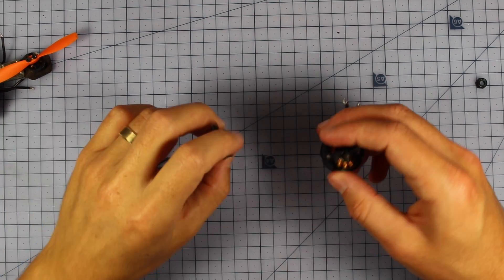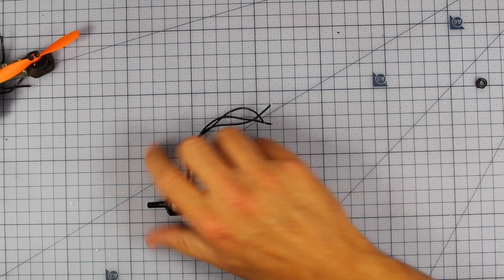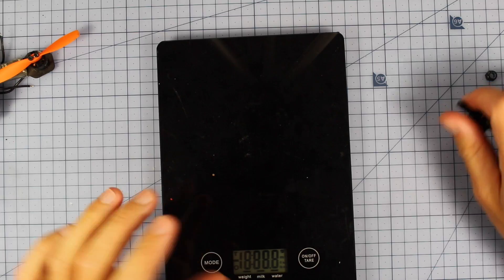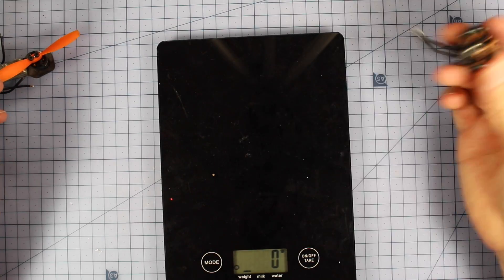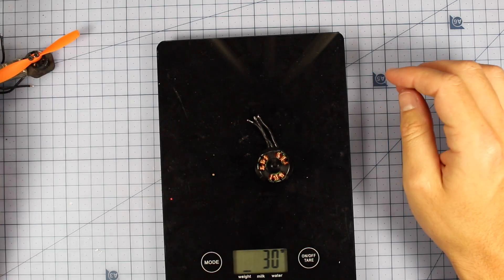The next thing we're going to talk about is weight. Weight is extremely important because these motors can be quite heavy. There is a large difference in the weight between the motors. They can be some of the heaviest components on your craft. For example, this Cobra 2206 is coming in at 30 grams.